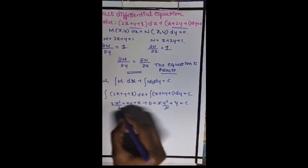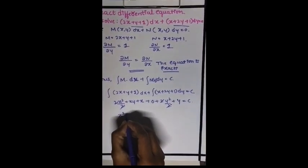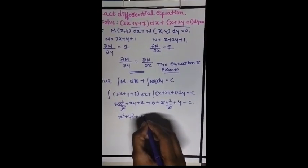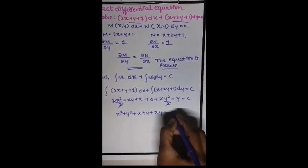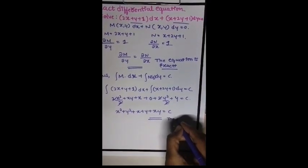These two and these two cancel. Hence the equation is x square plus y square plus xy equal to x plus y equal to c. The required equation is this.